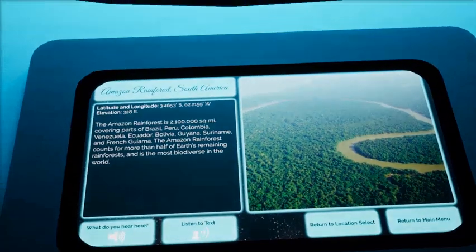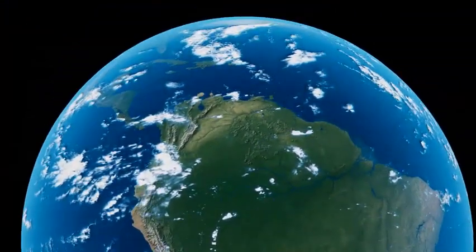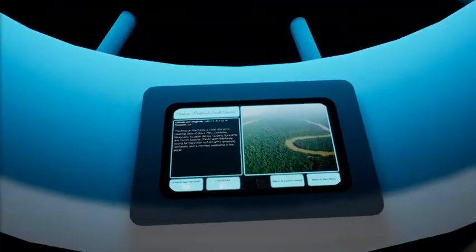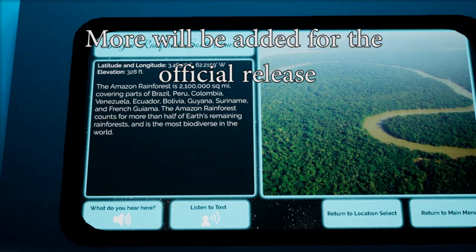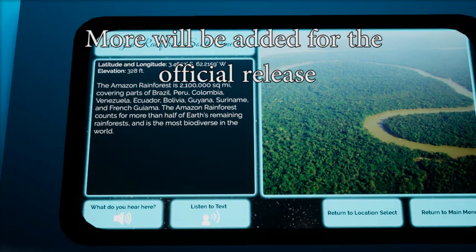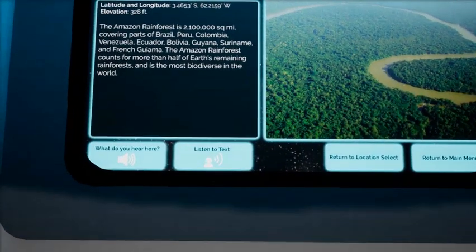The Amazon Rainforest is 2,100,000 square miles, covering parts of Brazil, Peru, Colombia, Venezuela, Ecuador, Bolivia, Guyana, Suriname, and French Guiana. The Amazon Rainforest accounts for more than half of the Earth's remaining rainforests and is the most biodiverse in the world.